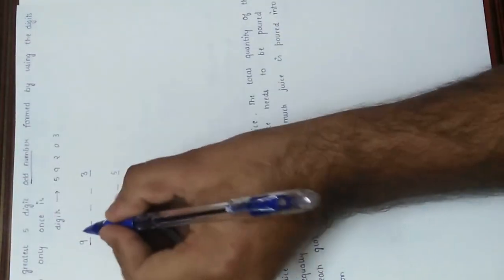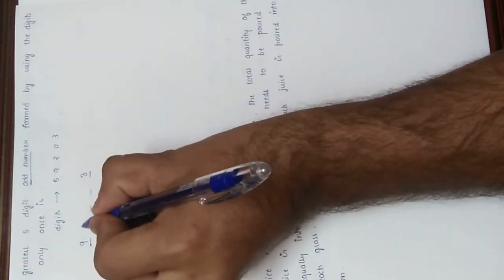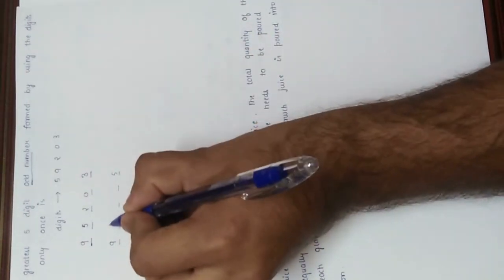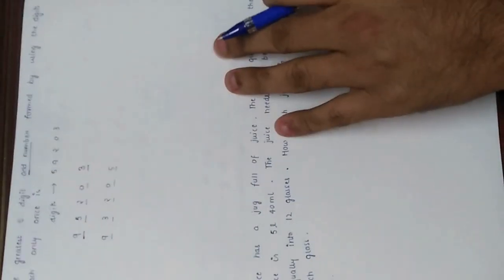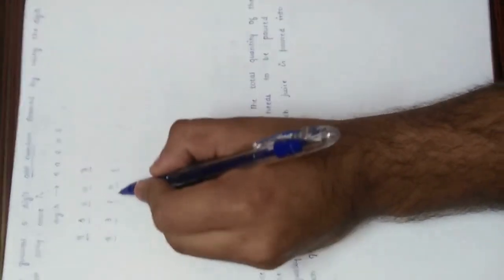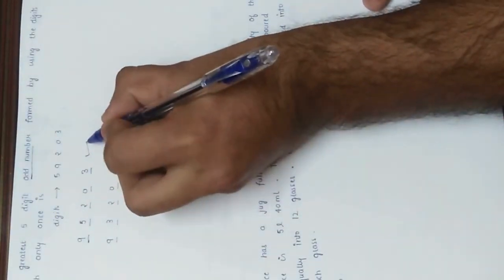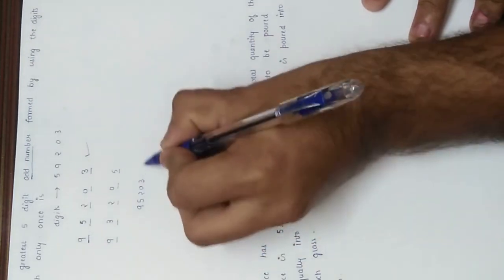So there are two options: units place is 3 or units place is 5. Arranging the remaining digits in descending order gives us either 95203 or 93205. Out of these two numbers, we can easily see that 95203 is greater.